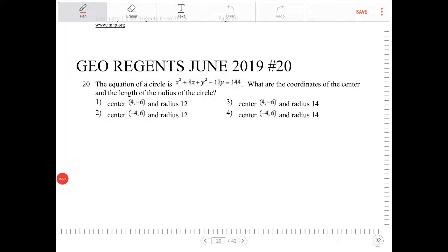The equation of a circle is x squared plus 8x plus y squared minus 12y equals 144. What are the coordinates of the center and length of the radius of the circle?